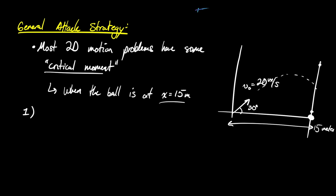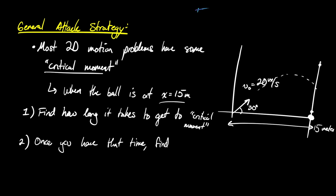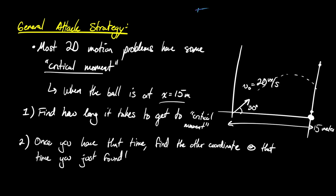The first step in this process is to find how long it takes to get to the critical moment. In this case we're finding the time when its x position was 15. Then you find the other coordinate — what's the y position at that time you just found. We're going to do a couple of different examples. But first, let's attack the problem we've been looking at.